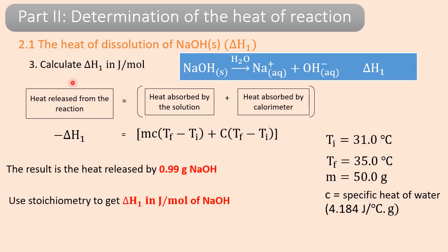Once you are done, we calculate delta H1 for this reaction — the heat of dissolution of sodium hydroxide. The heat transferred between the reaction and the solution in the calorimeter is: negative delta H1 equals mass of the solution times specific heat times delta T, plus heat capacity of the calorimeter times delta T (T final minus T initial).